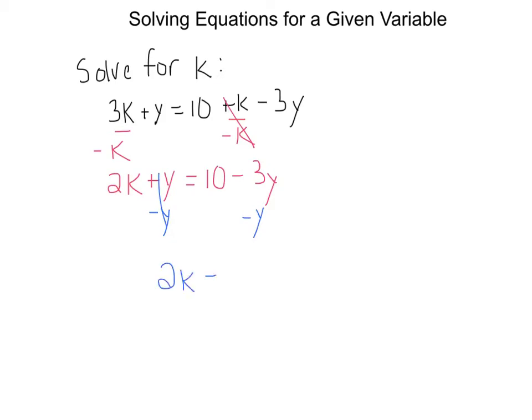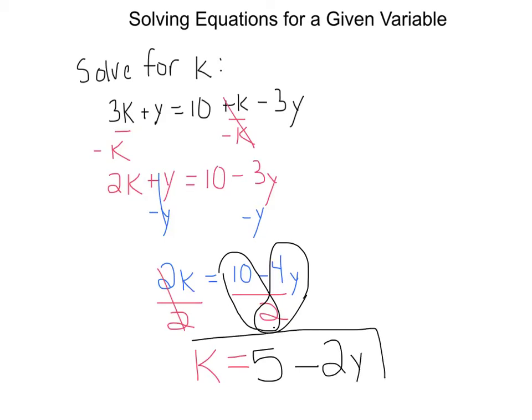And I have 2k equals 10. And then I have a minus 3y and a minus y. So that's like a negative 3 and a negative 1. So that's negative 4y. And then our final step is to get k by itself. Let's divide both sides of the equation by 2. And we are left with k on the left all by itself. And now over here, I'm kind of looking to see I need to do 10 divided by 2. And then I'm going to subtract 4y divided by 2. So that 2 goes into both of those. So I'm going to do 10 divided by 2 is 5 minus 4y divided by 2 is 2y. So k is equal to 5 minus 2y.